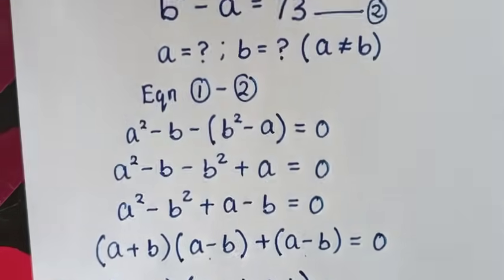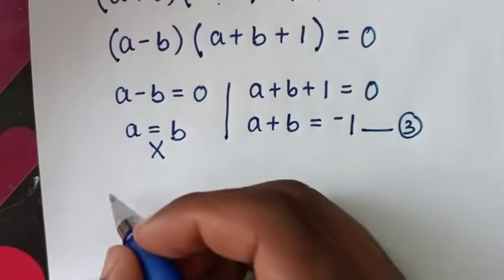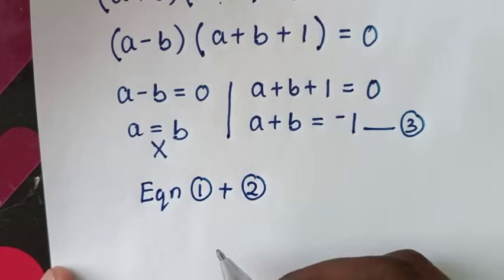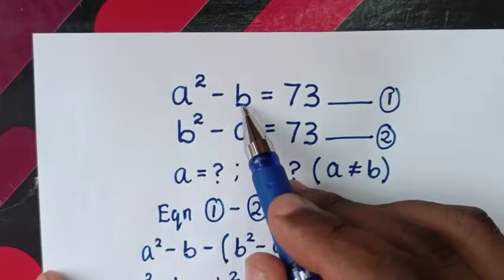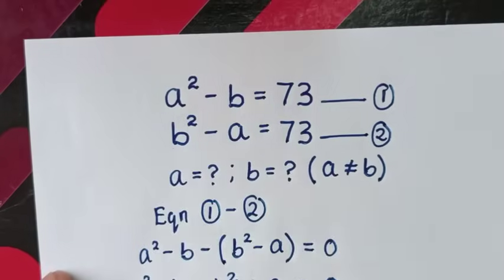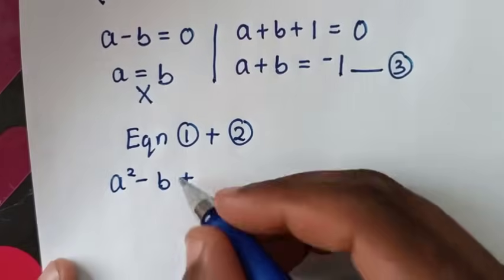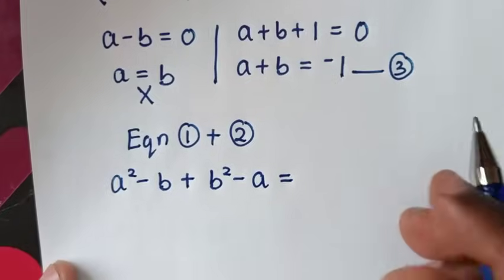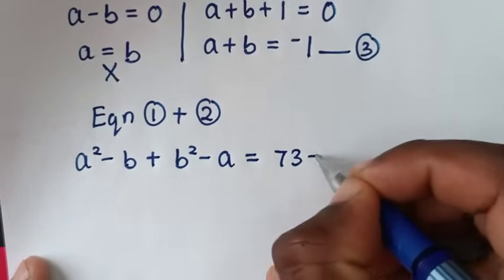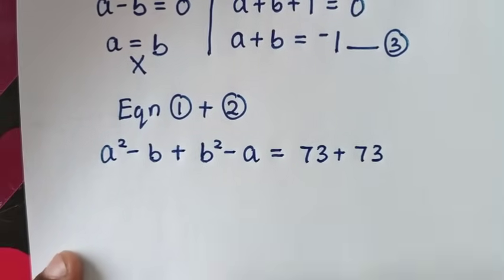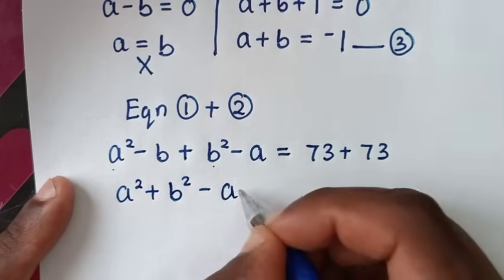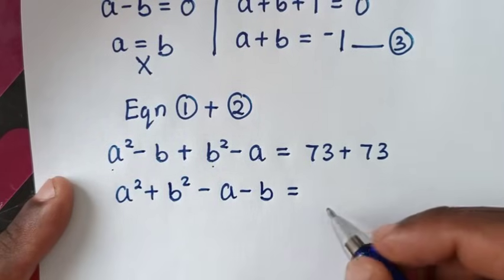In the next step, we'll take equation 1 plus equation 2. From equation 1, the left side is a squared minus b, plus equation 2 on the left side, which is b squared minus a, equal to 73 plus 73 on the right side. Combining, we get a squared plus b squared, then minus a minus b, equals 146.